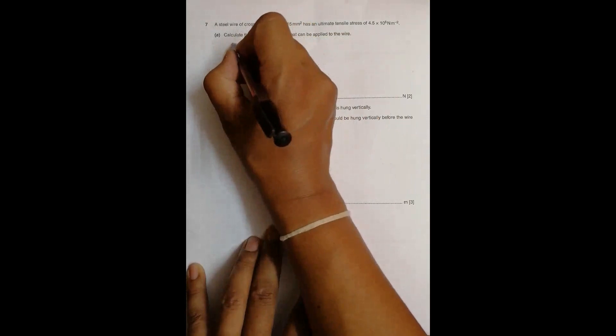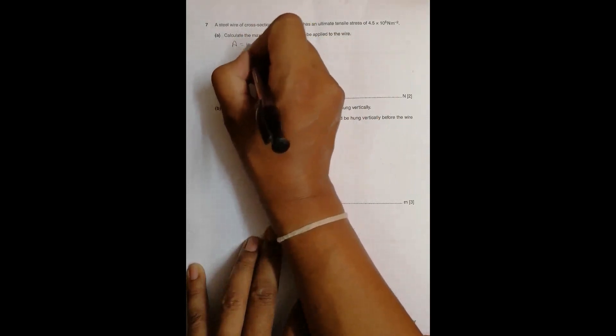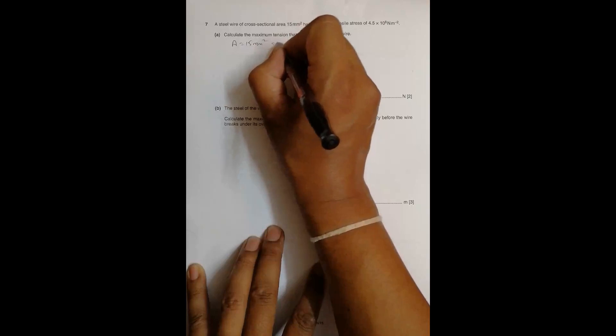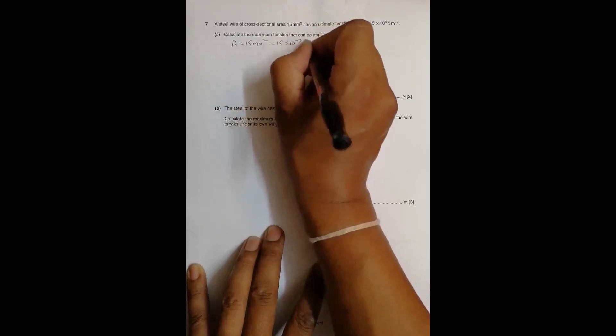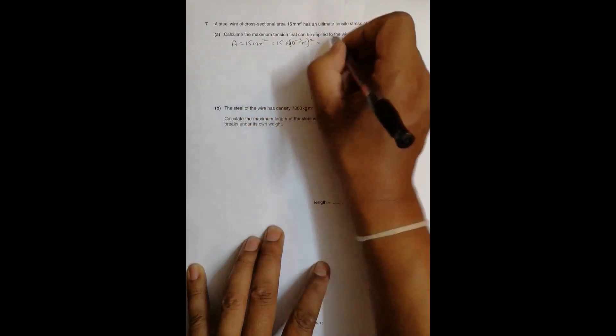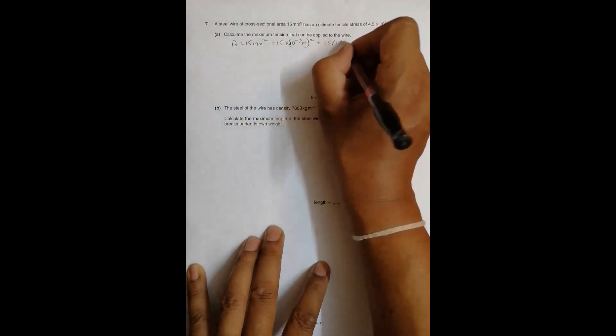So the cross-sectional area is equal to 15 mm squared, which will be equal to 15 times 10 to the power minus 3 meter squared, which equals 15 times 10 to the power minus 6 meter squared.